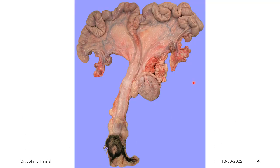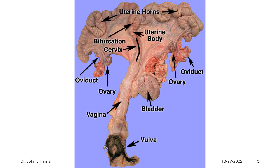This is the dorsal view of the sow reproductive tract showing its general parts. The sow reproductive tract has the following structures. Starting with the ovary, followed by the oviduct, then the long uterine horns. Beyond that, we have the uterine body, then the cervix, and after the cervix is the vagina and the vulva. Associated structures include the bifurcation, which separates the left and right uterine horns, and we also have the urinary bladder.